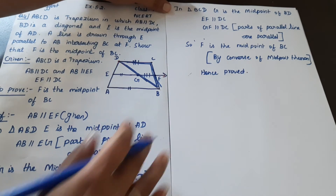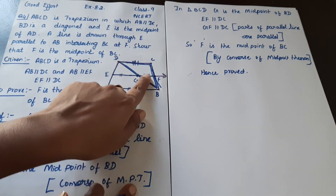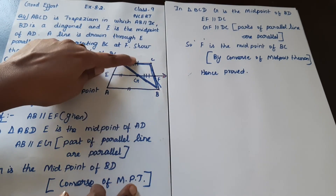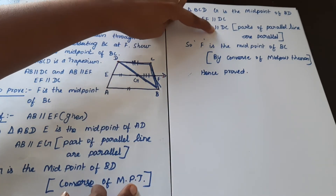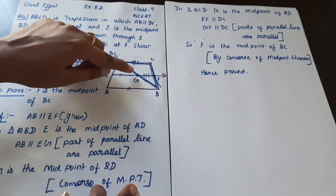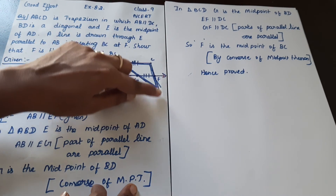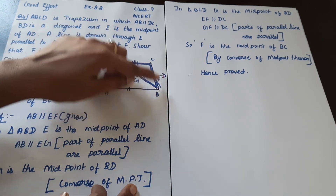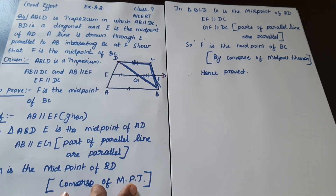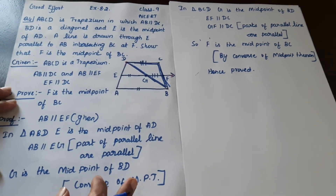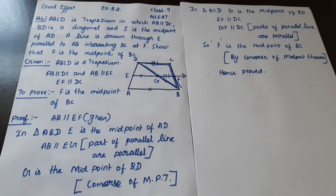By the converse of the midpoint theorem, GF is parallel to DC, and therefore F is the midpoint of BC. Next question will be in the next video. Please subscribe, share, like, and comment. Thank you.